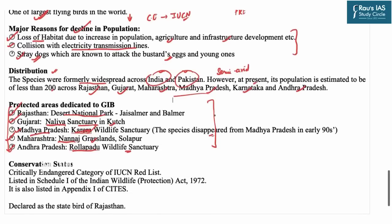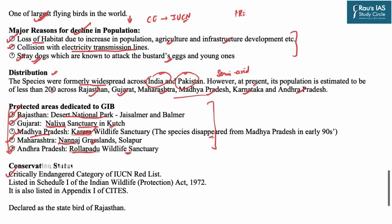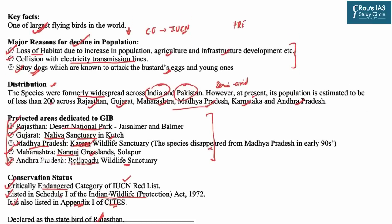As for conservation status, the Great Indian Bustard is listed as Critically Endangered on the IUCN Red List — the highest degree of vulnerability. Under India's Wildlife Protection Act 1972, it is listed in Schedule 1. It is also listed in CITES Appendix 1. The bird is also declared the State Bird of Rajasthan.